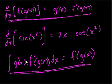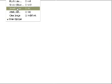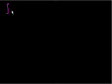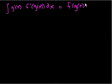Let's use this formula. All you have to know is this is the reverse of the chain rule. To rewrite it: the integral of g prime of x times f prime of g of x dx equals f of g of x. This is just the chain rule in reverse. I know it's complicated in this notation, but I'll give you a couple of examples.